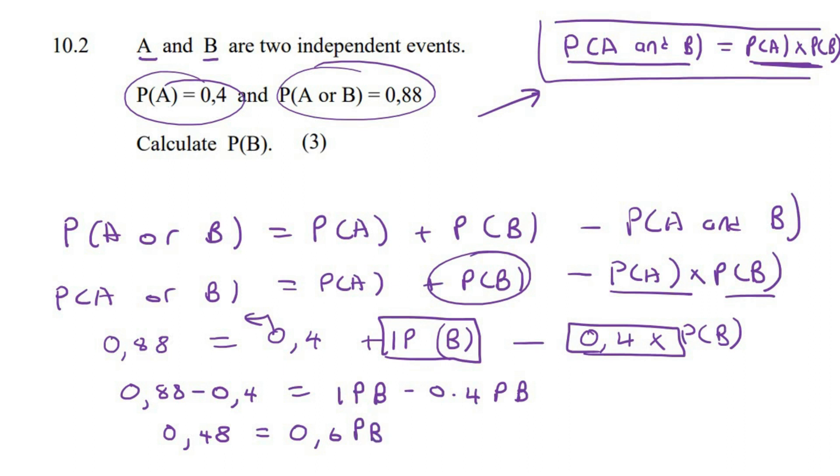And so you're going to end up with 0.48 on this side and 0.6 on this side. And so if you had to divide both sides by 0.6, you're going to end up with 0.48 over 0.6 and that would be a final answer of 0.8.